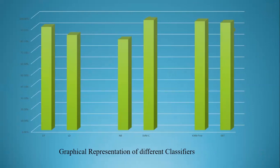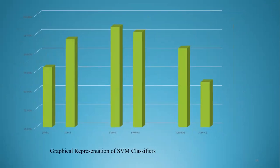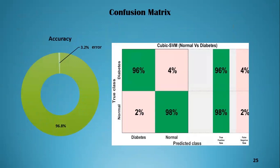Moving to results and discussion. A graphical representation of different classifiers is shown. We achieved the highest accuracy with the SVM-cubic classifier at 96.8%. The confusion matrix shows that only 4% of predictions are incorrect — 96% of data for both diabetic and normal subjects is correctly predicted, with only 2% of normal data unpredicted. This 96.8% accuracy is the maximum obtained in this study.